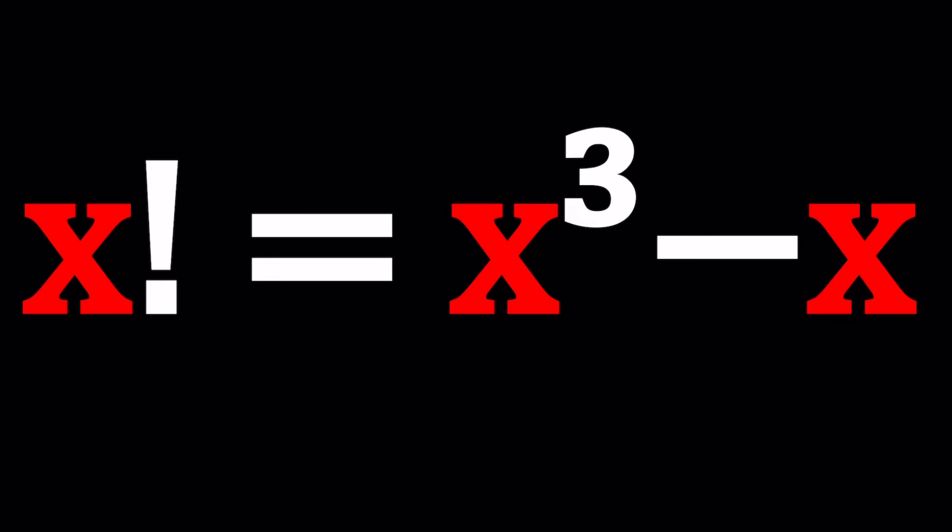Before we start solving this problem, I just want to show you a graph of two things. One of them is x factorial, and the other one is x cubed minus x.